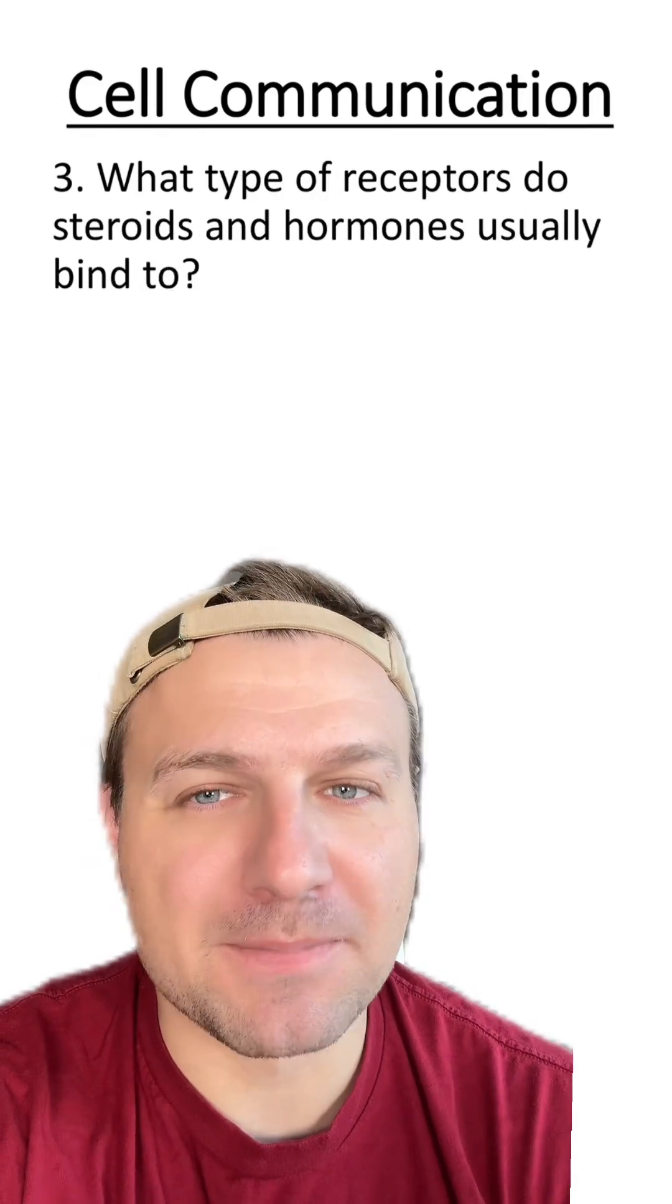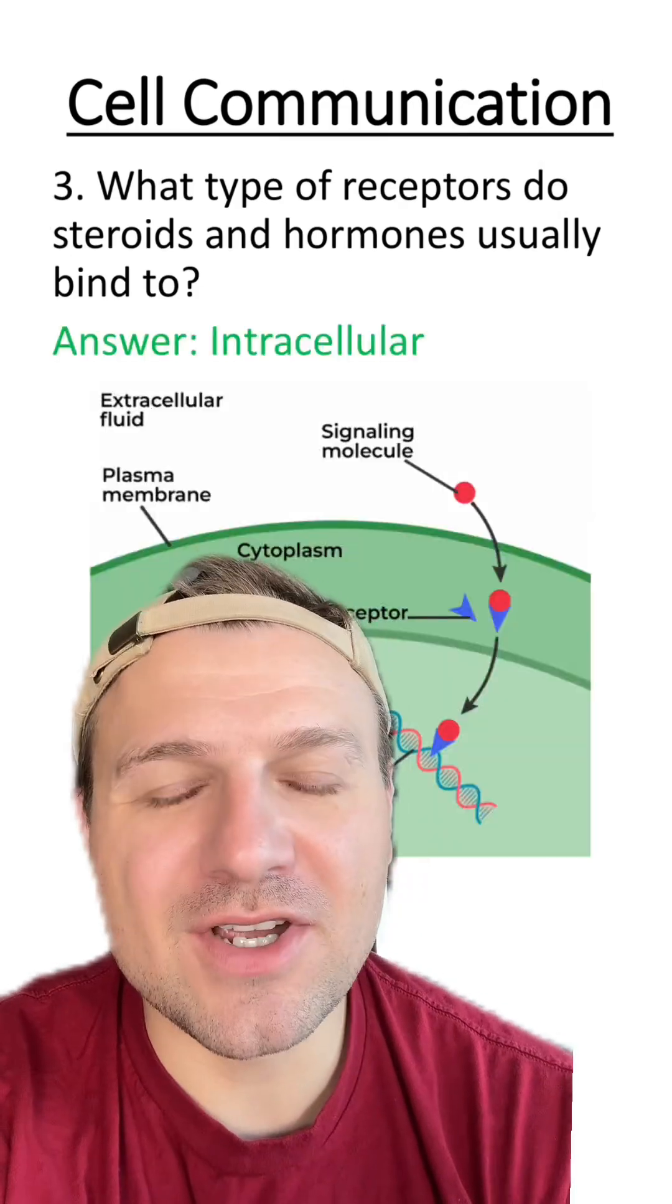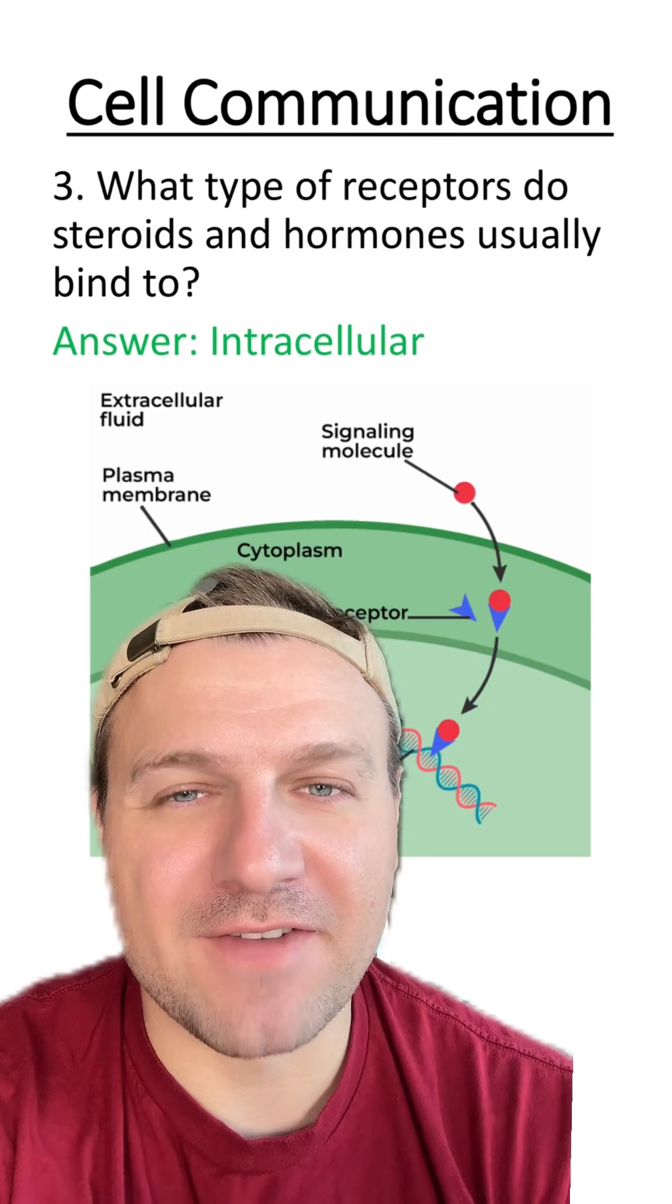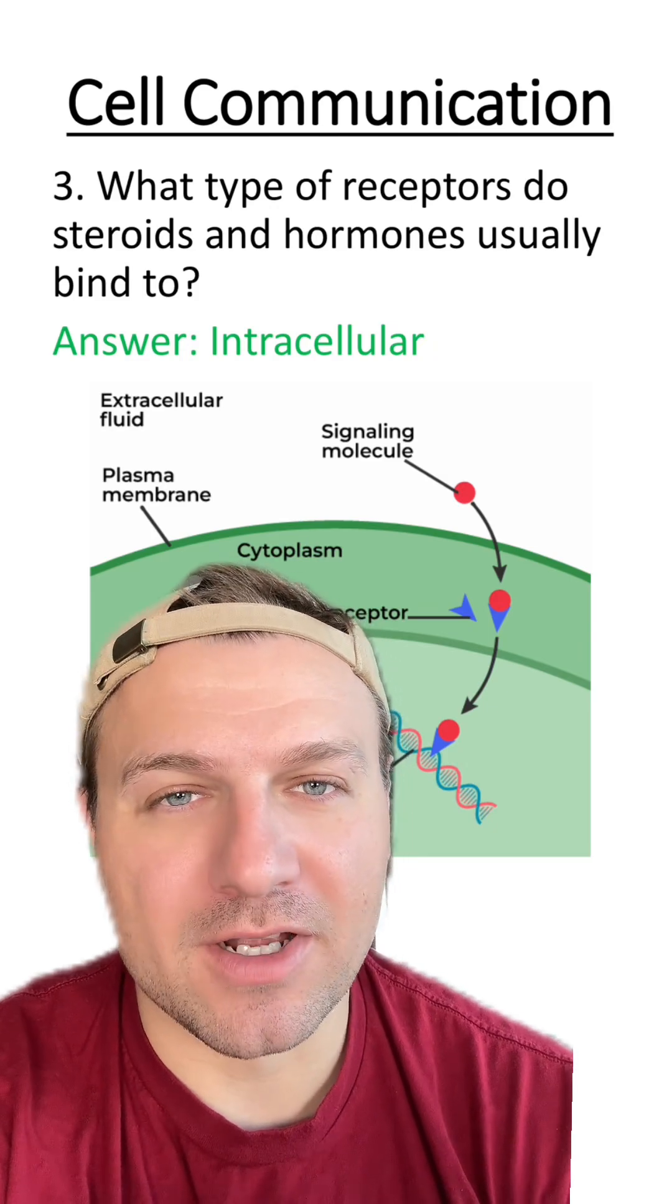Number three, what type of receptors do steroids and hormones usually bind to? These are known as intracellular receptors since they're found within the cell and not a part of the cell membrane.